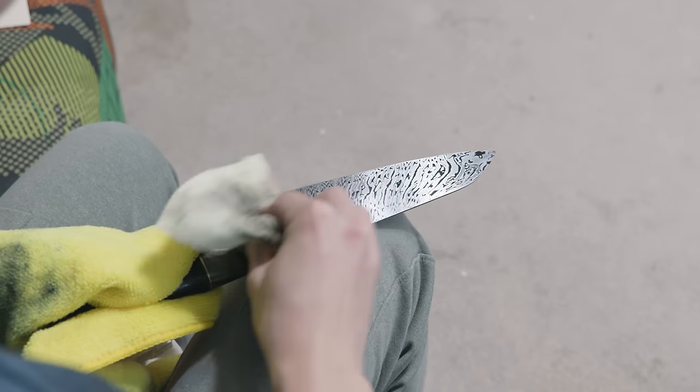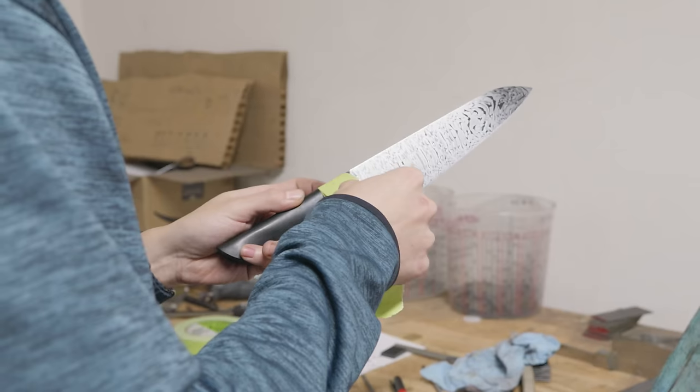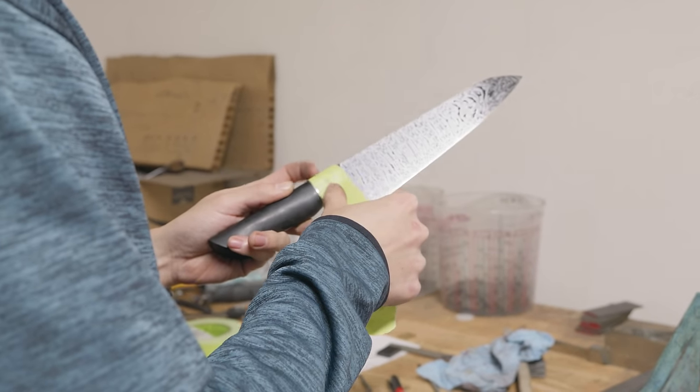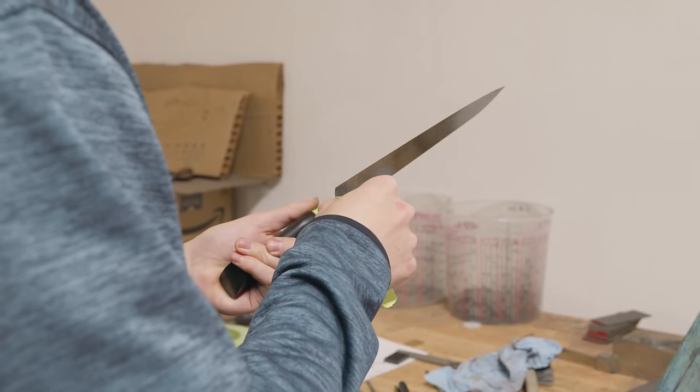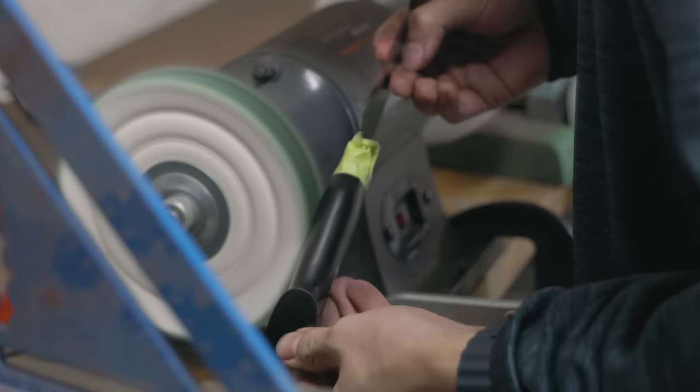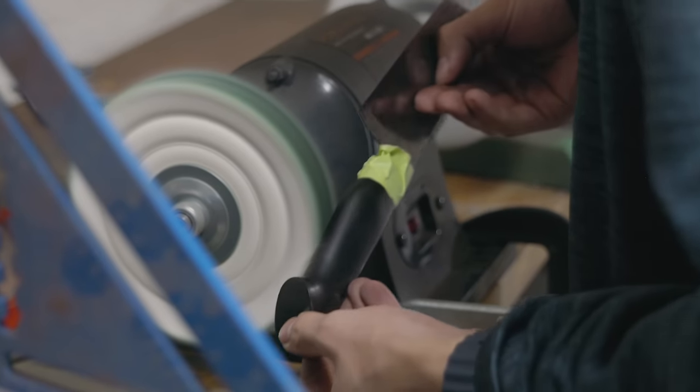But yeah, after a quick wipe with the sunshine cloth and a quick buff on the handle, the blade is actually completely finished. I hope you enjoyed watching me build this Firestorm Damascus Chef's Knife, and I hope you enjoy the b-roll as well. See you next time.